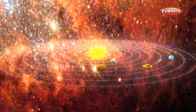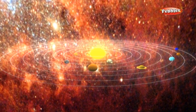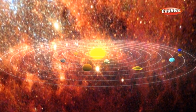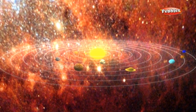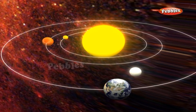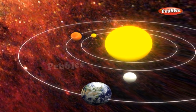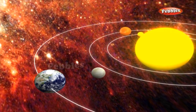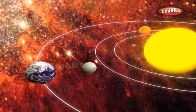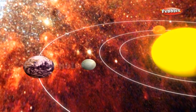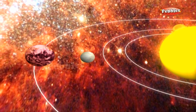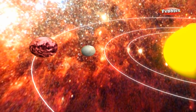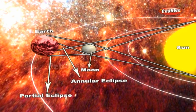Solar eclipse: A solar eclipse occurs when the moon comes in between the sun and the earth, and the shadow of the moon falls on the earth. Some places on the earth are in the umbral region and some are in the penumbra region. People in the umbral region see a total solar eclipse; people in the penumbra region see a partial solar eclipse. When the tip of the umbral region fails to reach the earth, an annular eclipse occurs and the sun appears as a ring of light.